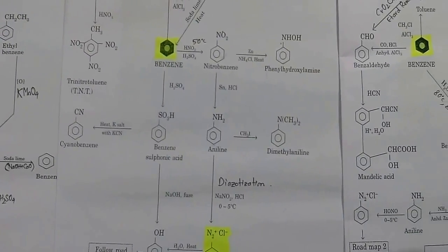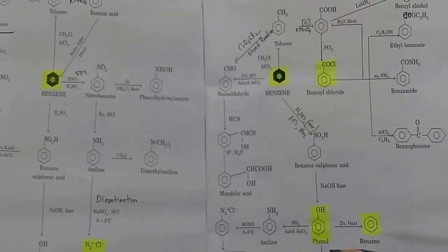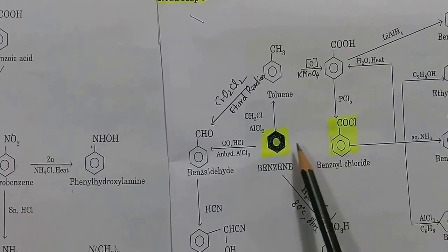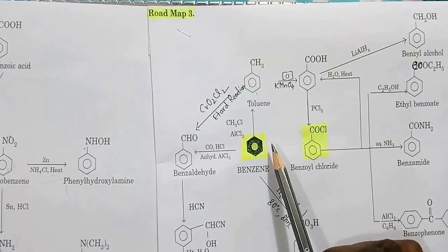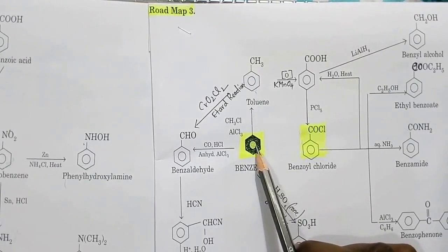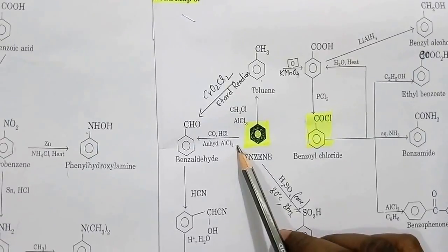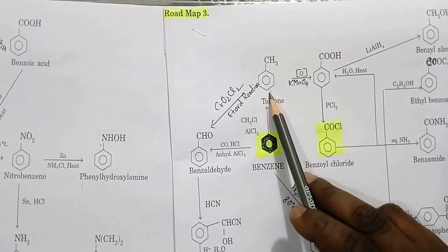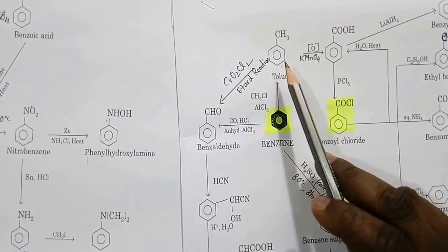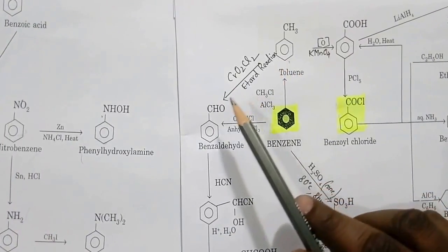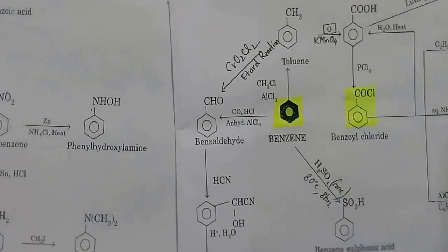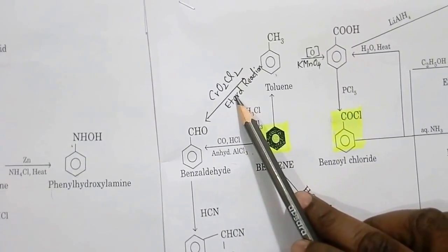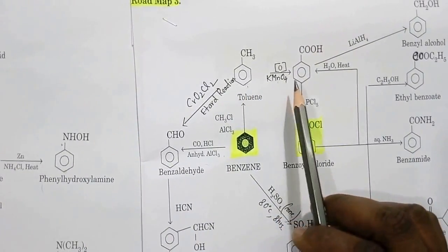Moving to roadmap 3, again starting with benzene. Benzene to toluene by Friedel-Crafts alkylation. Benzene can also be treated with carbon monoxide and HCl in presence of anhydrous AlCl3 to give benzaldehyde. Toluene can be converted to benzaldehyde using CrO2Cl2 (chromyl chloride) — the reaction is called the Etard reaction. Toluene can also be treated with KMnO4 to get benzoic acid.